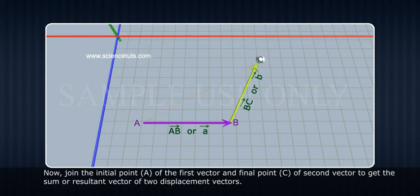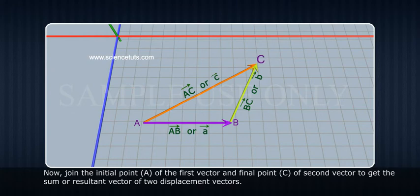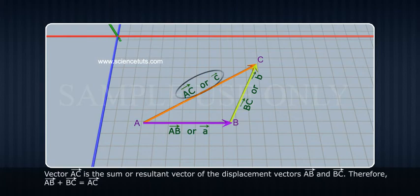Now, join the initial point A of the first vector and final point C of the second vector to get the sum or resultant vector of two displacement vectors. Vector AC is the sum or resultant vector of the displacement vectors AB and BC.